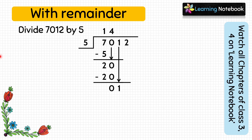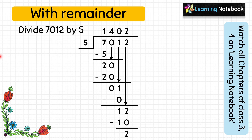So we do 5 into 0 equals 0, and 1 minus 0 equals 1. Now copy the next digit 2, so divide 12 by 5. 5 into 2 equals 10, and 12 minus 10 equals 2. We cannot divide further, so we write the answer as quotient equals 1402 and remainder equals 2.